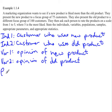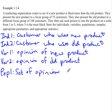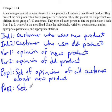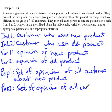Now we come to the populations and samples. The population is the set of a variable from all of the individuals. So population one would be the set of opinions of all customers about the new product, and population two would be the set of opinions of all customers about the old product.